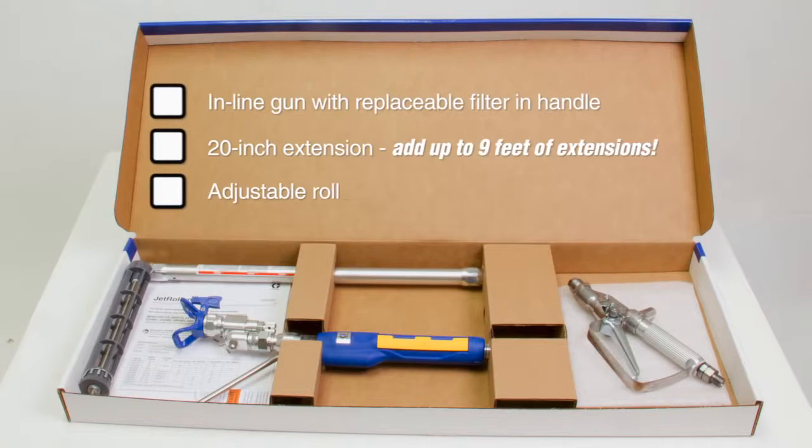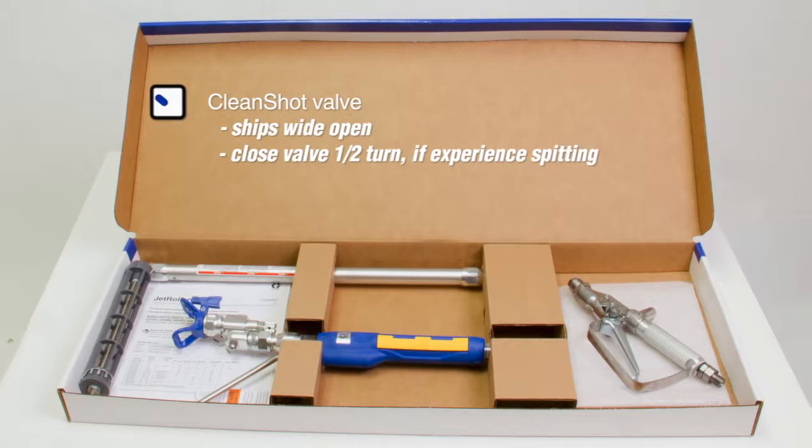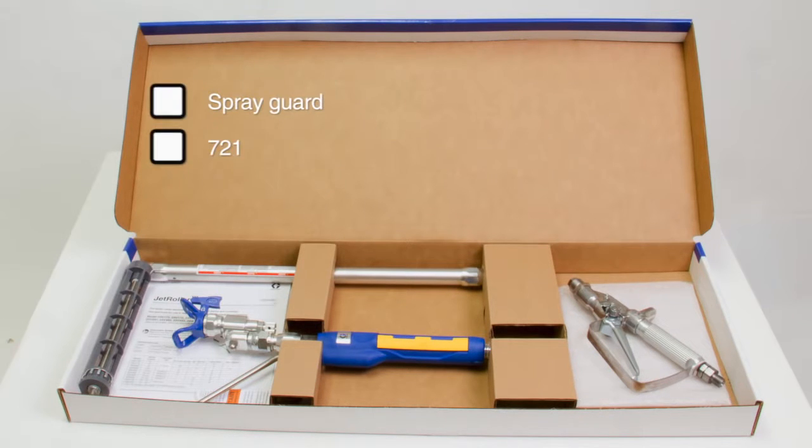The Jet Roller system includes an inline gun with a replaceable filter in the handle, a 20-inch extension, an adjustable roller handle which fits your favorite off-the-shelf 9-inch roller covers, the patented clean shot valve—an adjustable spring-loaded valve which helps eliminate spits and drips from pressure buildup in the extension—a spray guard, and 721 tip.